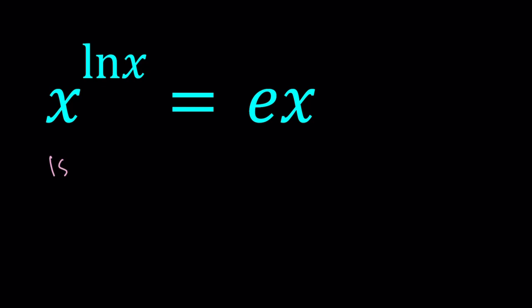Okay, first method, I'll be ln-ing both sides. When you ln both sides, you get the following. We have ln x to the power ln x equals ln e x.